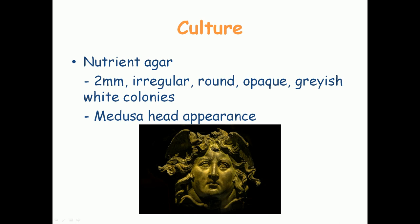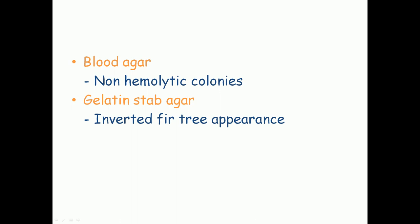For culture, anthrax is a non-fastidious organism so it grows well on normal nutrient agar without special conditions. It produces colonies that are about 2 mm, irregular, round, opaque, and grayish-white in color. When observed under a light microscope, the colonies show what is described as medusa head appearance — resembling the hair of the Medusa statue — which is the characteristic appearance of Bacillus anthracis colonies under light microscopy.